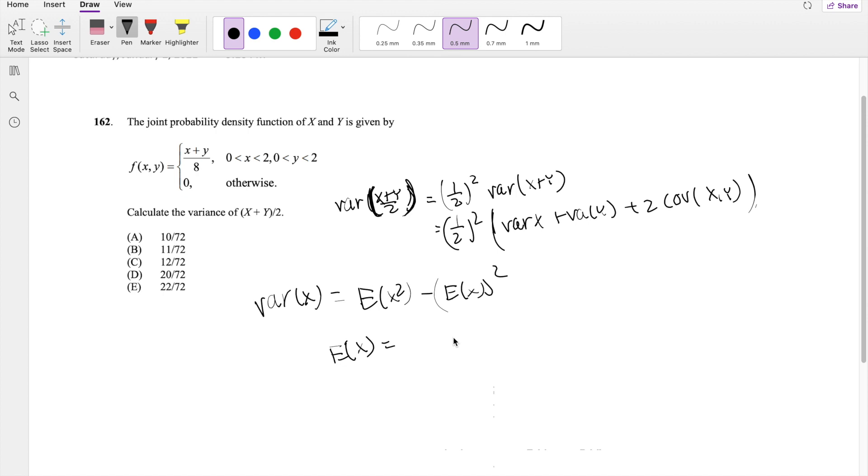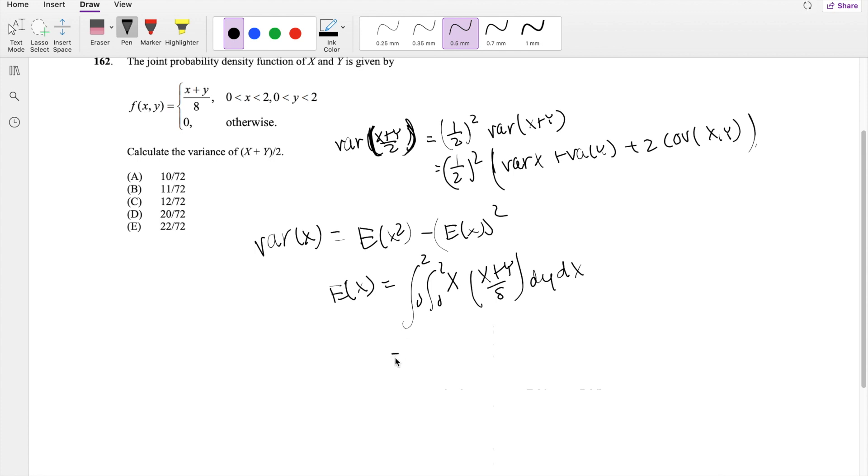Let's find the expectation of x. The expectation of x is just x times the probability distribution function, which is x plus y over 8, evaluating from 0 to 2, 0 to 2, dy dx. I'm throwing that 1/8 outside. So you get 0 to 2, 0 to 2, x squared plus xy, evaluating in terms of dy first.